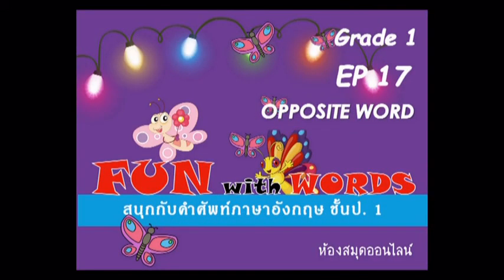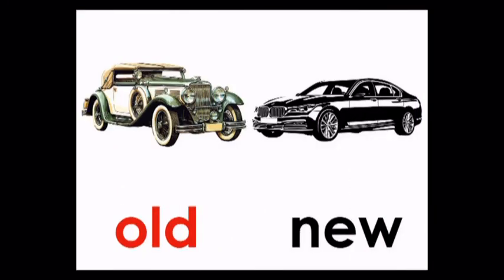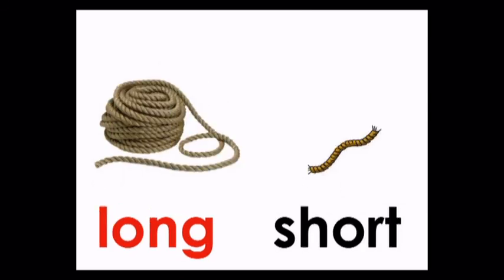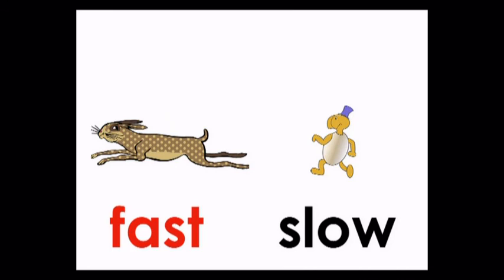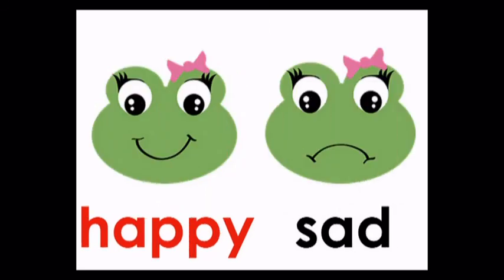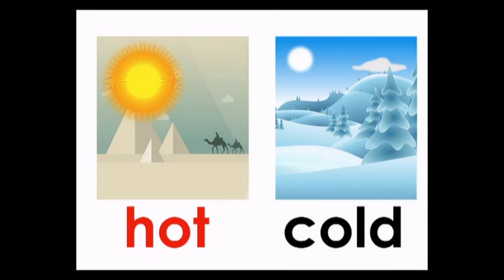Episode 17: Opposite Word – Old, New. Big, Small. Long, Short. Fast, Slow. Noisy, Quiet. Happy, Sad. Hot, Cold.